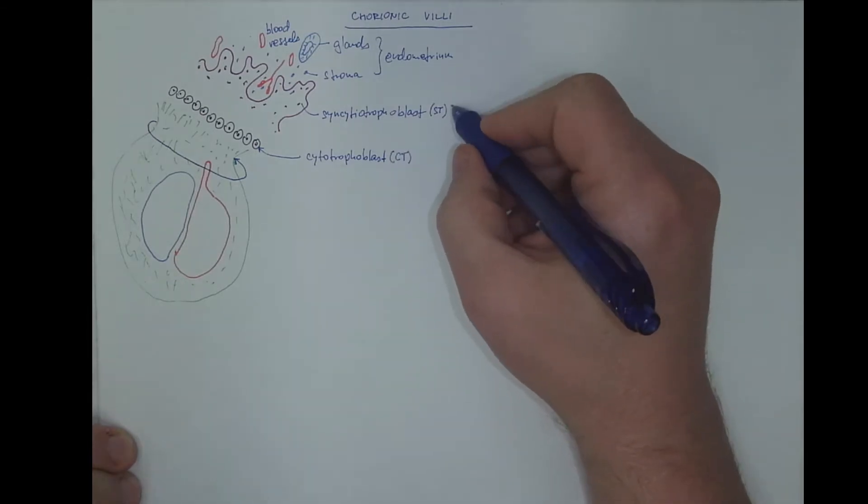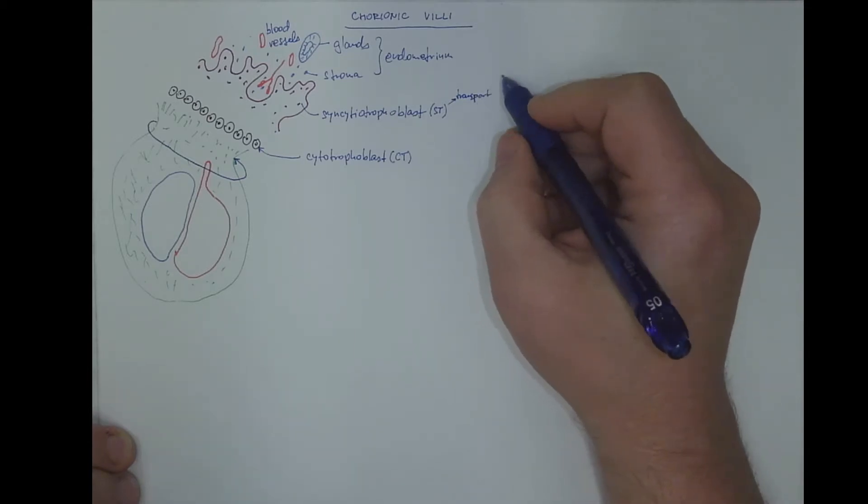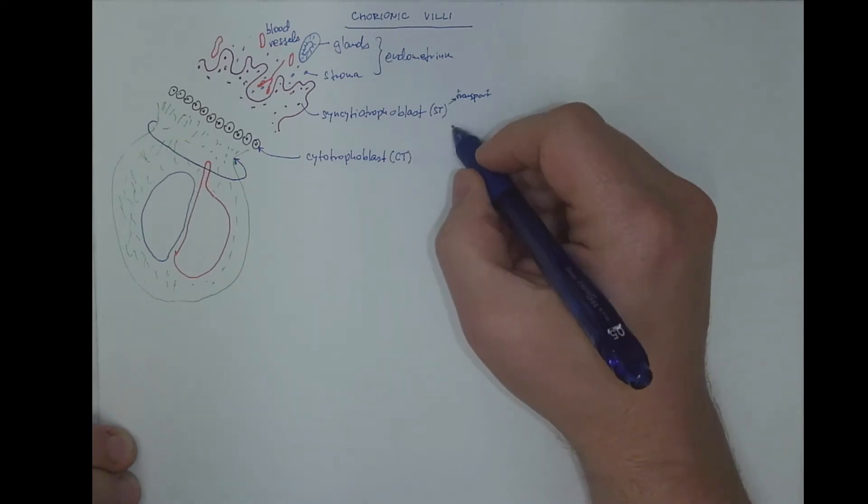The function of the syncytiotrophoblast is to transport gases, nutrients, and waste products, and also to produce the majority of the placental hormones.